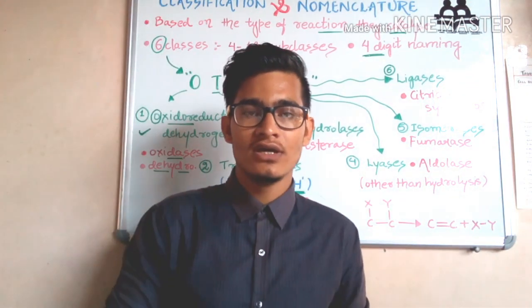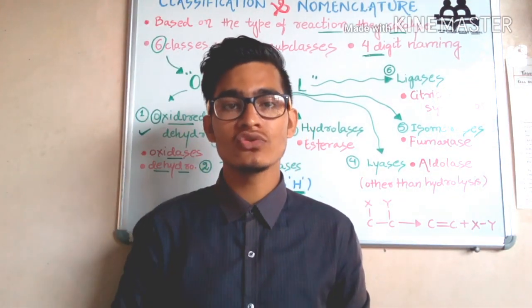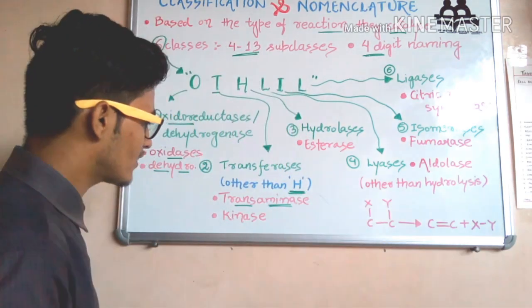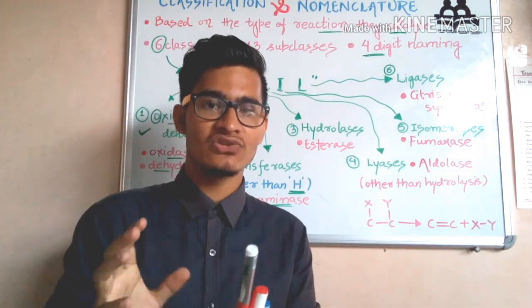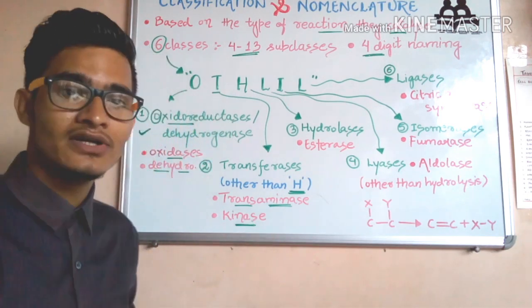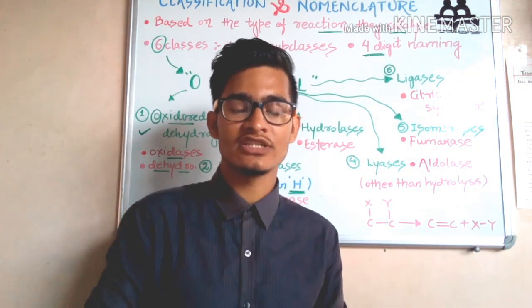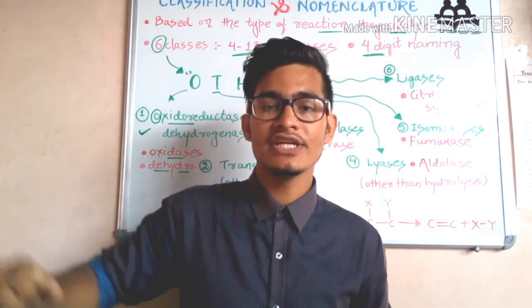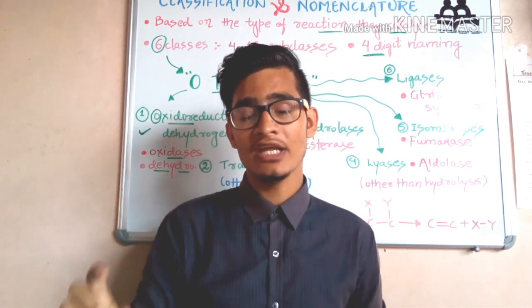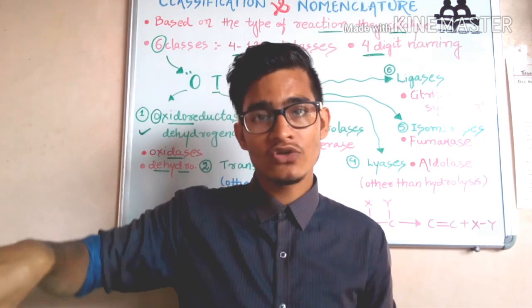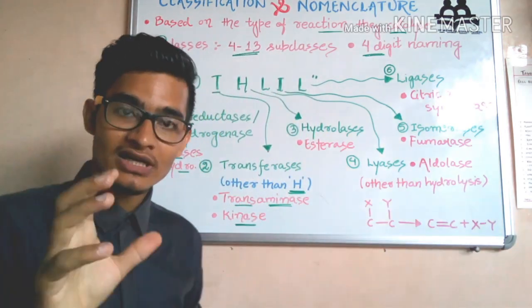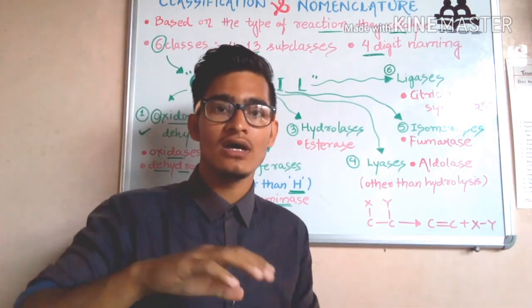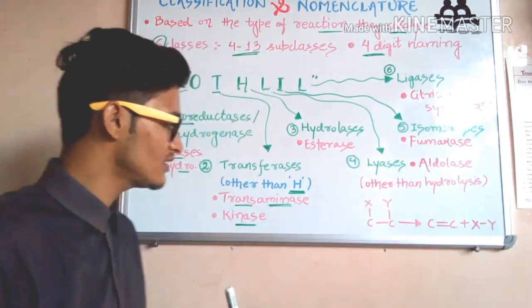For example, if you study biochemistry at a higher level, you study protein metabolism and amino acid metabolism. There are some reactions in which amino groups are transferred, and the enzyme is transaminase. Also, you have studied kinase — for example, in glycolysis, phosphofructokinase, where the phosphate group is transferred from ATP to a substrate. The kinase enzyme helps transfer a group other than hydrogen. If we were transferring hydrogen, it would be oxidation-reduction.